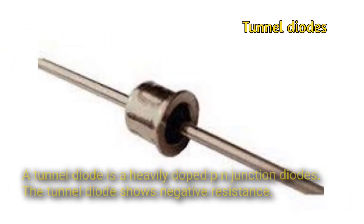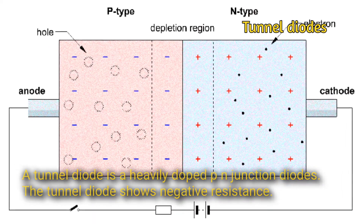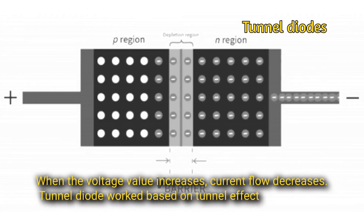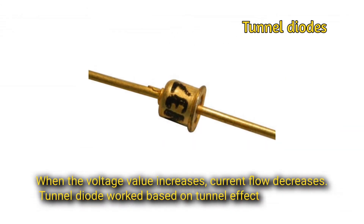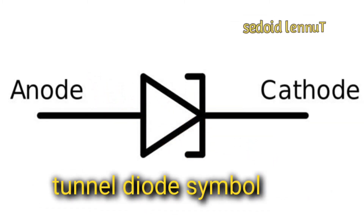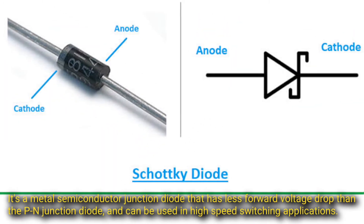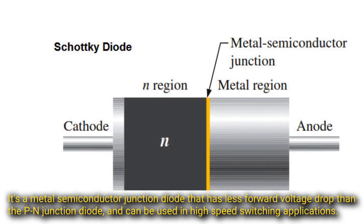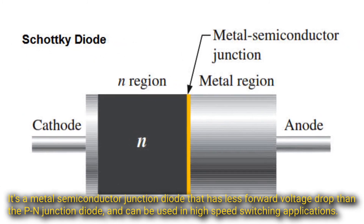Tunnel diode: a tunnel diode is a heavily doped PN junction diode that shows negative resistance — when voltage value increases, current flow decreases. The tunnel diode works based on the tunnel effect. The symbol of the tunnel diode in a circuit reflects this, and it can be used in high-speed switching applications.